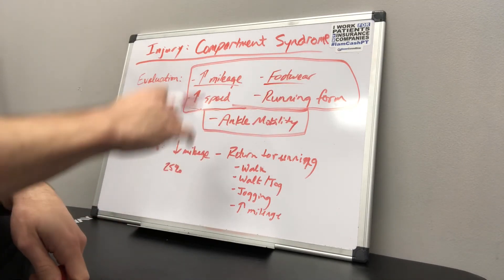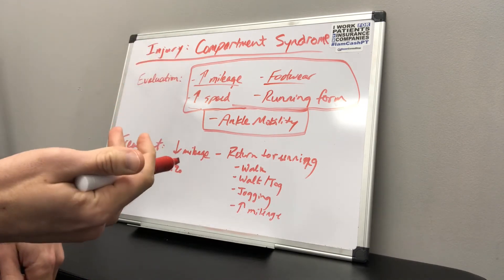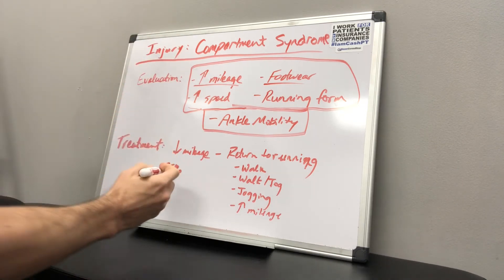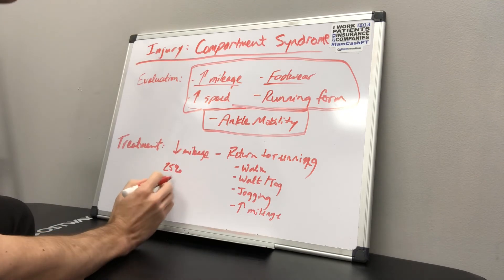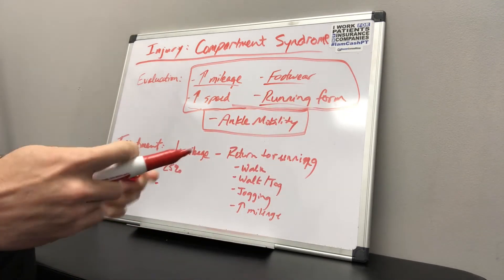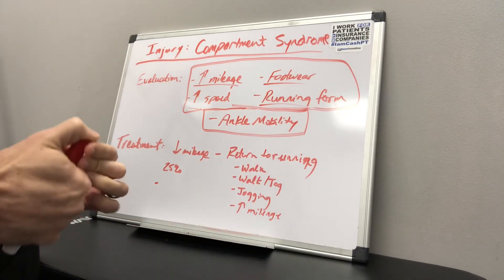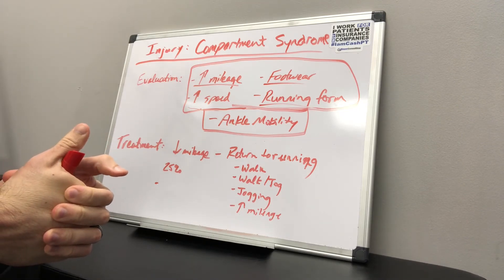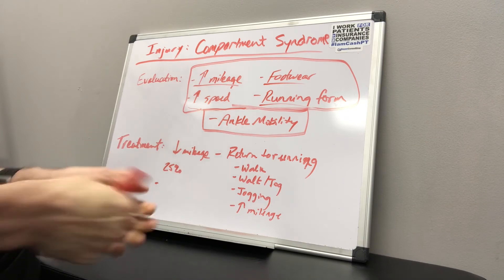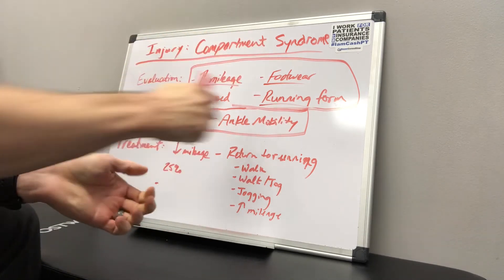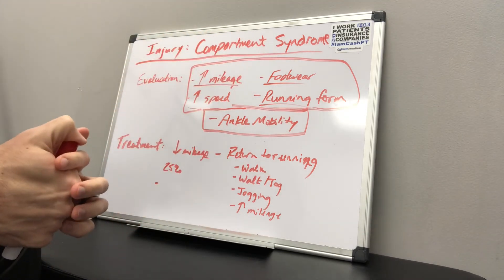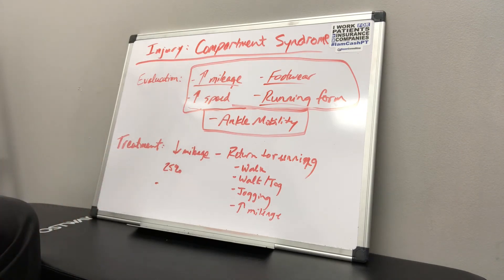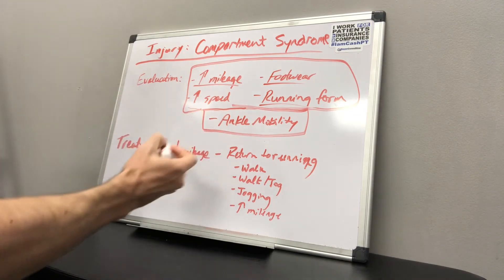We also looked at running form. I didn't change a whole lot with her form — the changes she was making were a good thing. I think it was just the combination of everything thrown together causing the problem. For the ankle mobility, she started at 10 degrees of dorsiflexion.